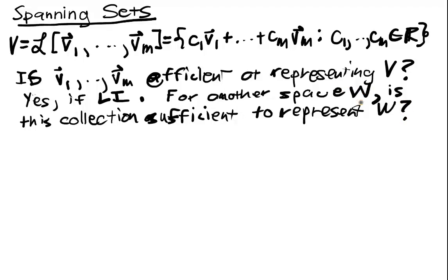That is, can I write everything in W as a linear combination of these Vs? So this will introduce the notion of spanning.